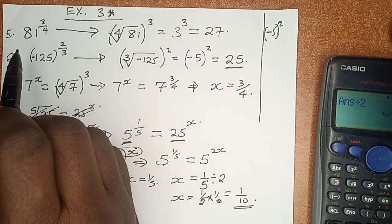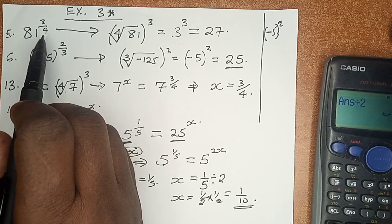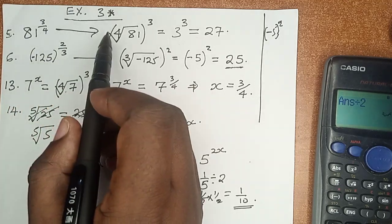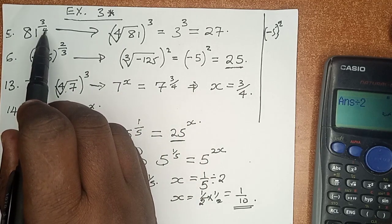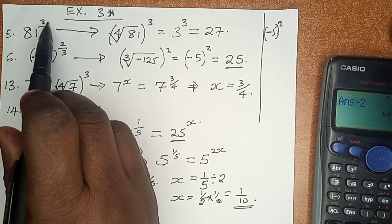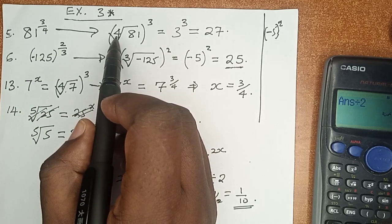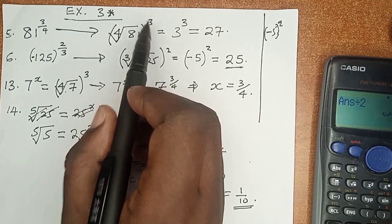Number 5 is 81 raised to power 3 over 4. And this, as per what we have understood in the previous examples, 4 is at the denominator and 3 is at the numerator. So we go for the fourth root of 81, after which we cube the results.